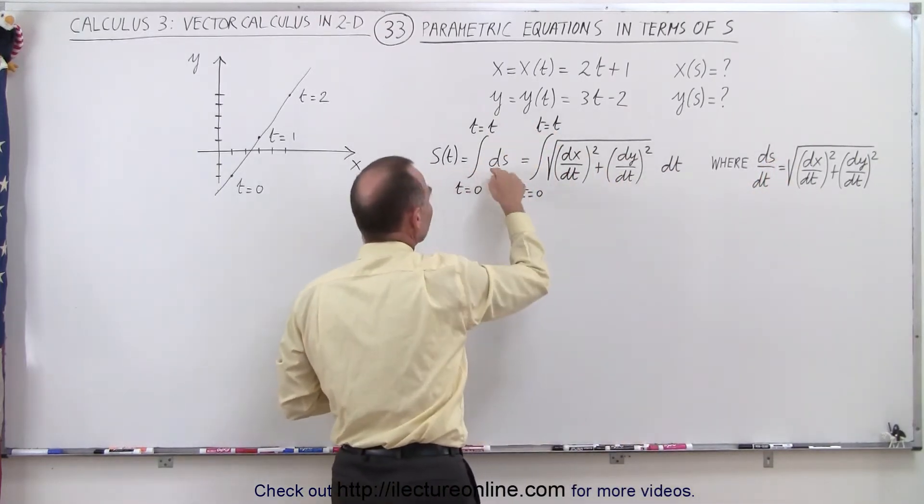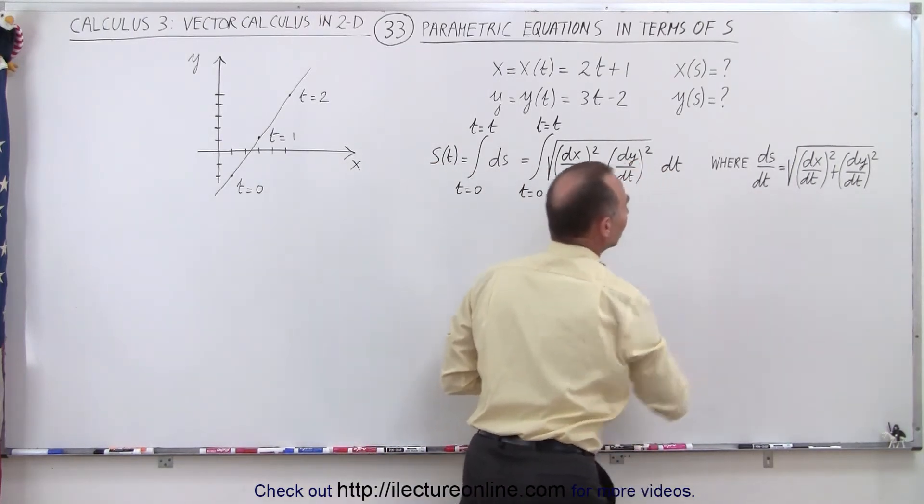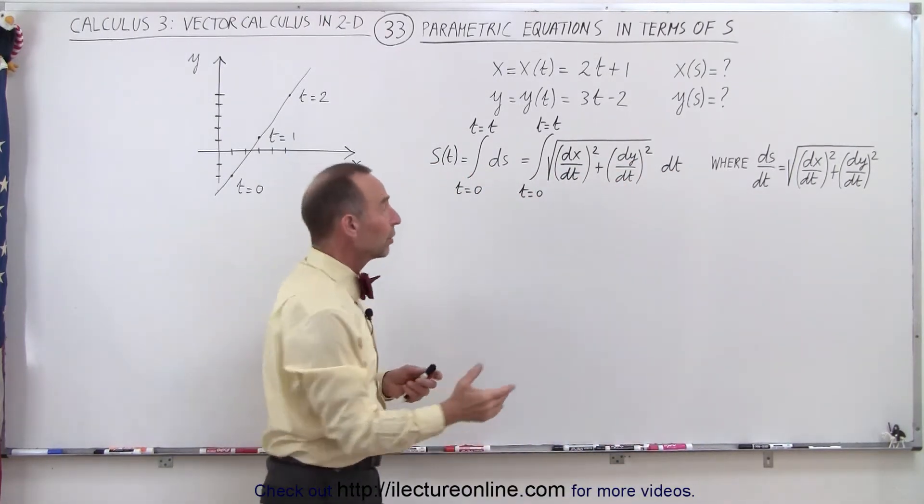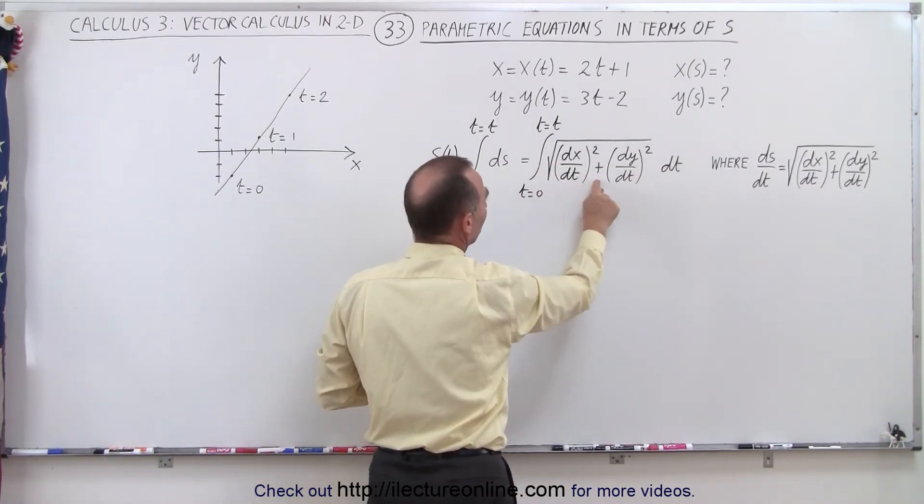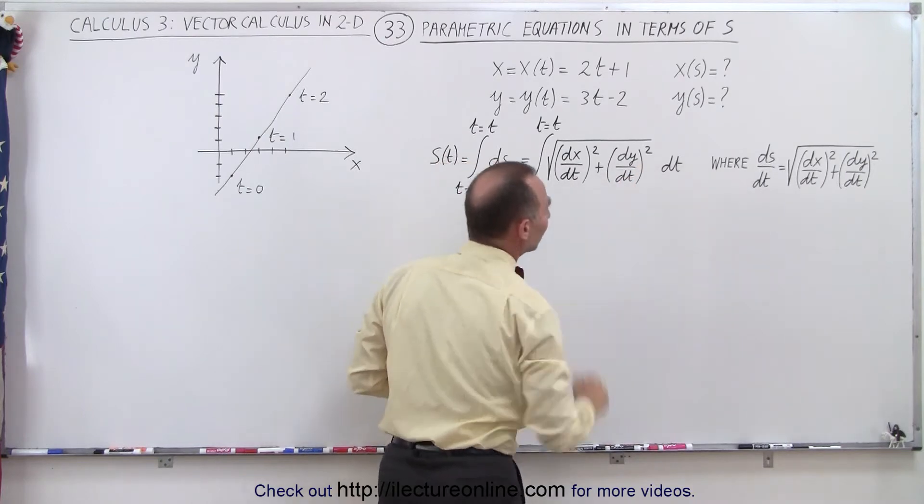So if we're going to integrate over ds, we have to multiply this times dt in order to do that integration. And so the integral will then look as follows. It's the integral of the square root of (dx/dt)² plus (dy/dt)² times dt.